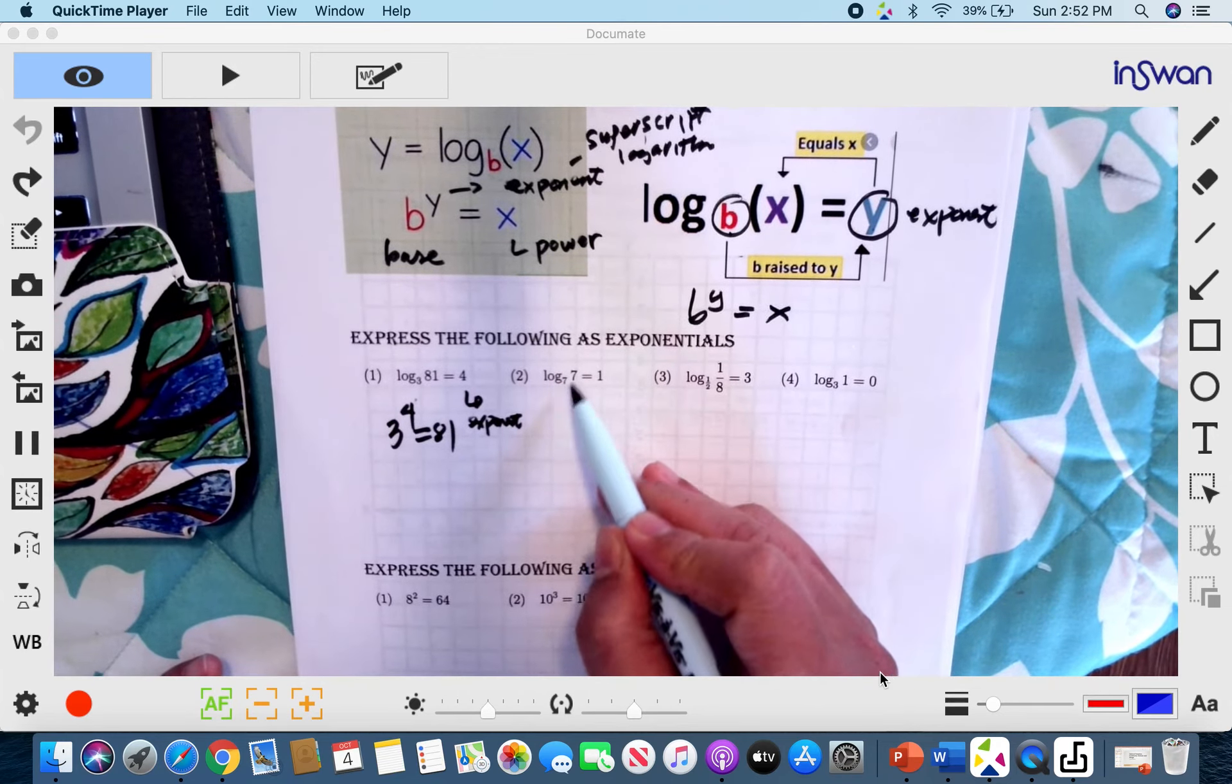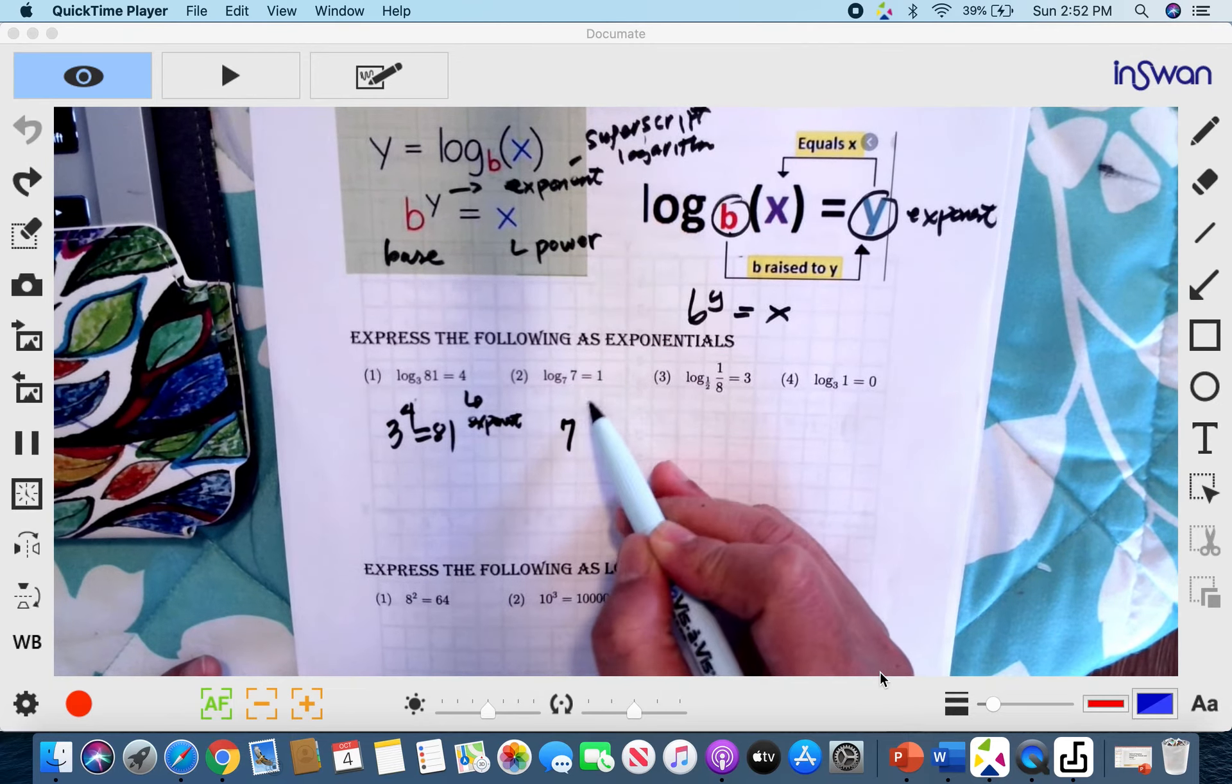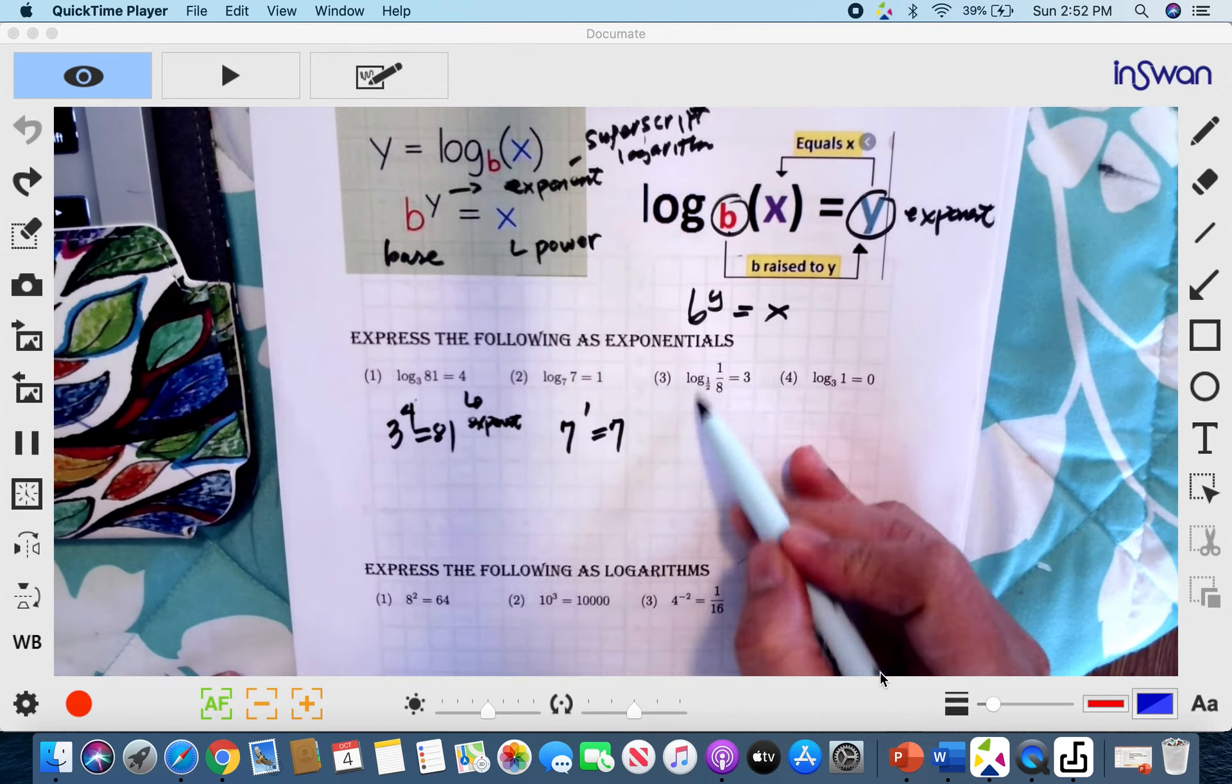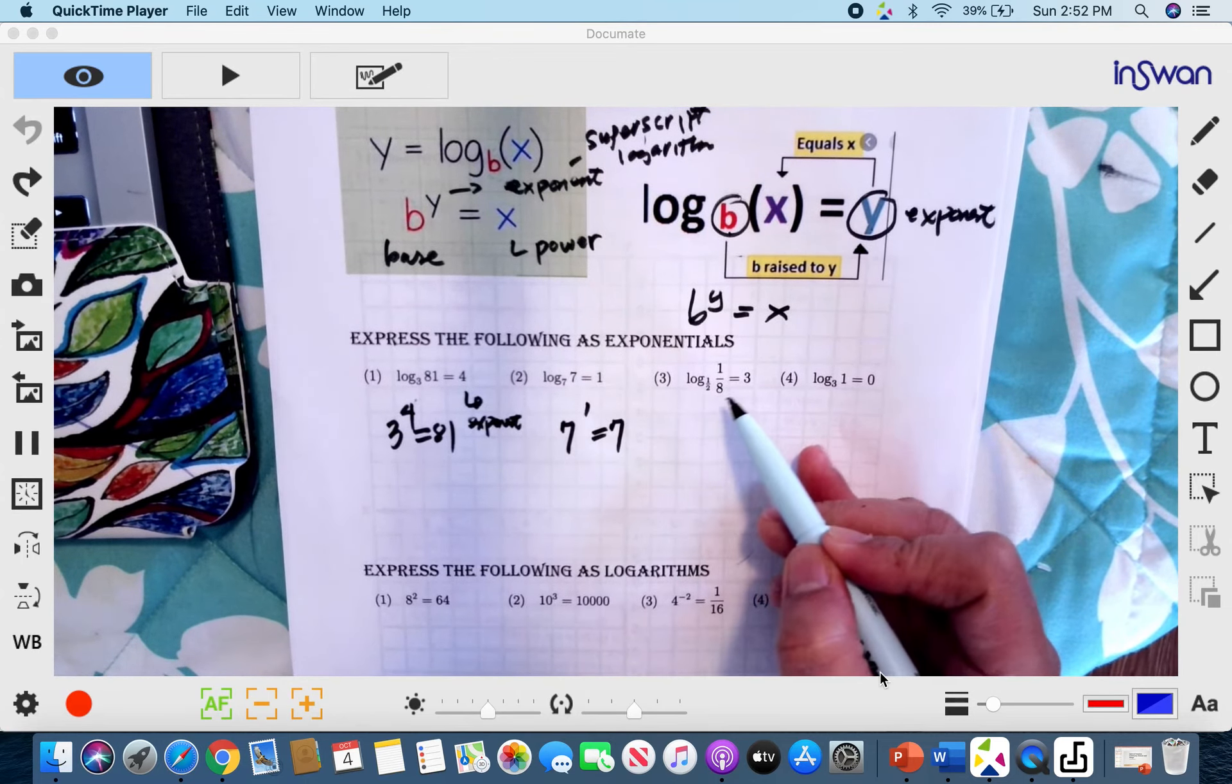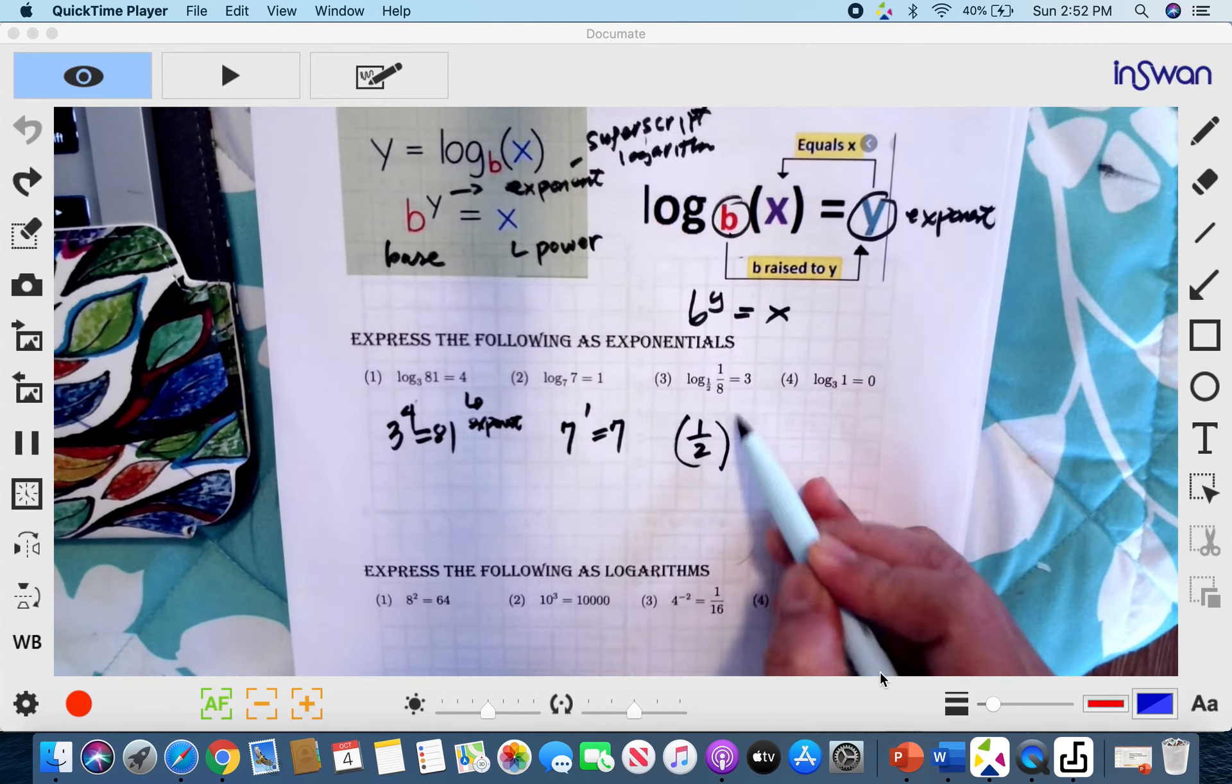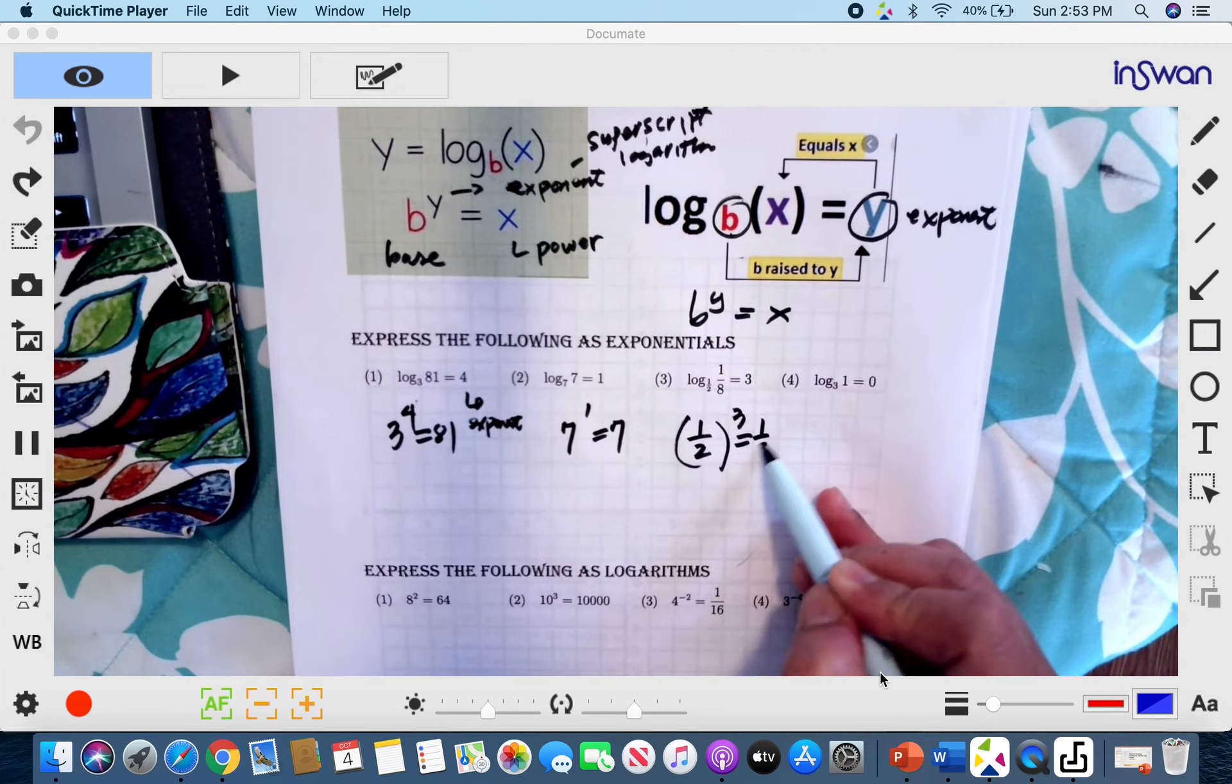This one, our base is 7. Our exponent is 1. And it's equal to 7. This one, our base is 1 third or 1 half. And our exponent is 3 is equal to 1/8.